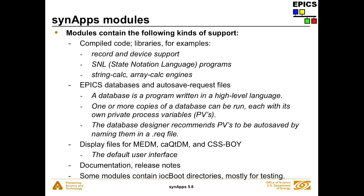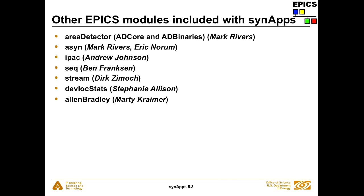There's a Synapse release, which is just one particular collection of modules, and in between that, all of the other modules can be updated whenever they want to. Some modules contain IOC boot directories, mostly for testing. There are other EPICS modules included with Synapse — in the tar file and also in APS share — that are not strictly part of Synapse. We pull ADCore and ADBinaries out of area detector, which is now on GitHub. The actual detector modules aren't included with Synapse because they require vendor-supplied software to build.